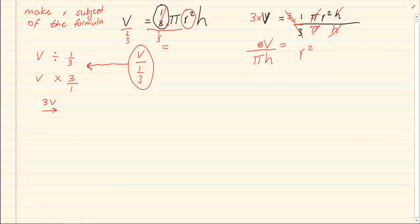Now I have r squared is equal to 3V over pi h. And last you get rid of what is closest to the unknown. In this case r squared. So how do we get rid of a square? The opposite of a square is a square root.